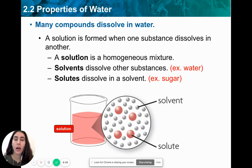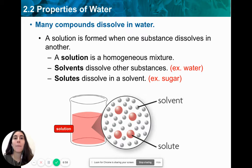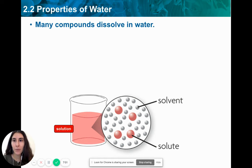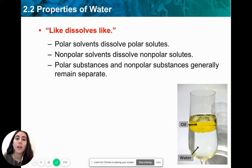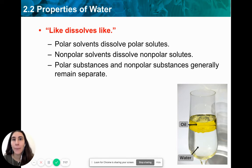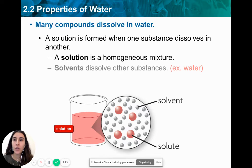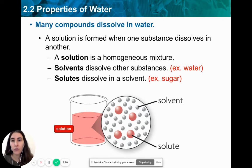In order for a homogeneous solution — basically a solution where you can't tell the parts apart — to form, both the solvent and the solute must be alike; they must both be either polar or non-polar. The oil and water example is not a homogeneous solution because you can tell the layers apart — they did not mix. So when forming a solution, both the solvent and the solute have to be the same, either both non-polar or both polar.